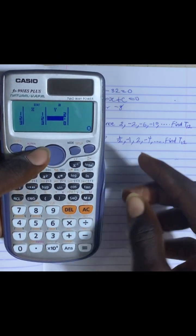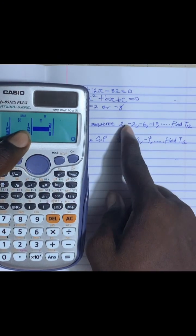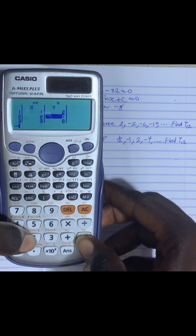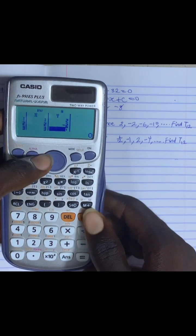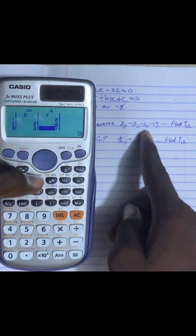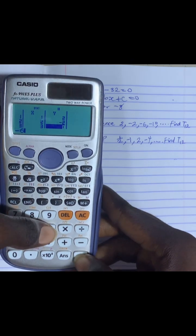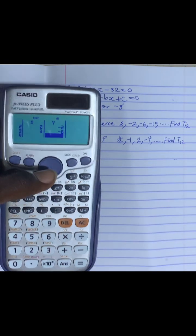I press 2. The value of second term is minus 2. I press minus 2 and then I'll press equals to for it to appear there. The value of the third term is minus 6. I press minus 6, press equals to and it appears there.